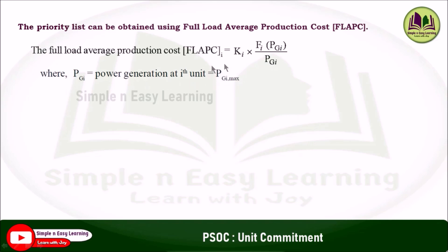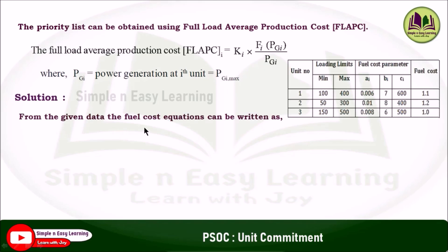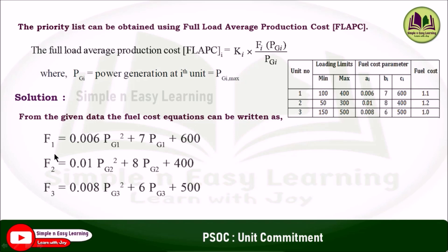Substitute the maximum limit of generation into this formula. From the given data, the fuel cost equations can be written using the fuel cost parameters. F1 = 0.006·PG1² + 7·PG1 + 600, where AI is the coefficient of PG_i², BI is the coefficient of PG_i, and CI is the constant. Similarly, equations for units 2 and 3 are written using the same structure.